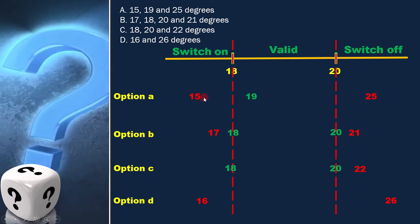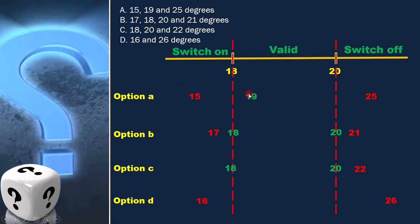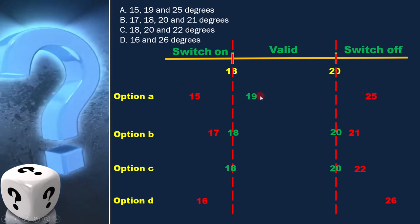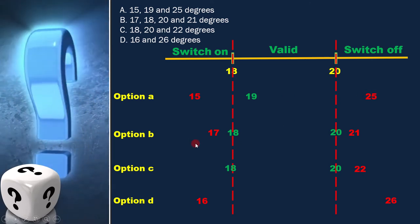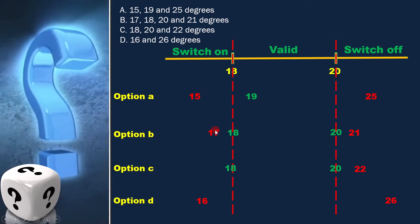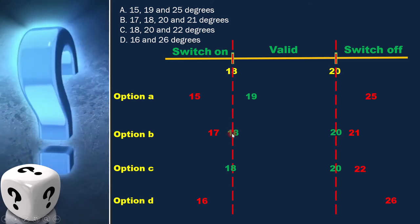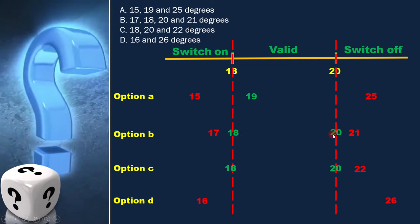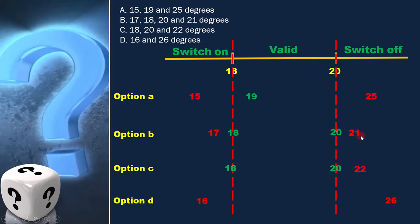In option A, 15, 19, and 25 are in different classes. In option B, 17 is in one class, 18 and 20 are in one class, and 21 is in one class.